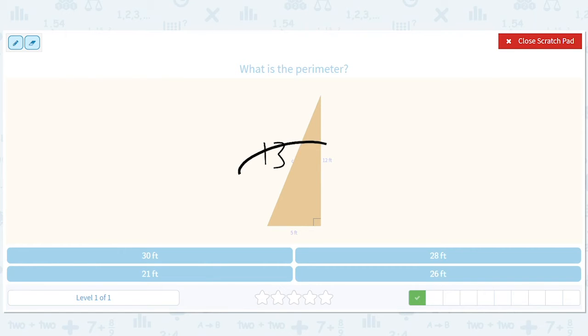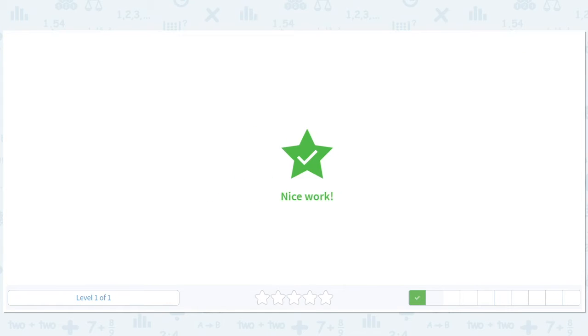So we knew it was a 5-12-13 if you remember that shape. So then you add 13 and 12, you get 25, you add 25 and 5, and you get 30. And so the answer is 30 feet, that's the perimeter.